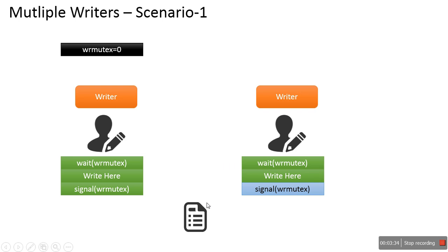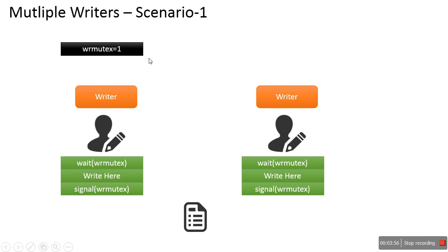So in this scenario, if multiple writers are present, only one writer gets access to the shared file to perform a write operation. When the second writer finishes, it will call the signal function, which increases the value of the semaphore.